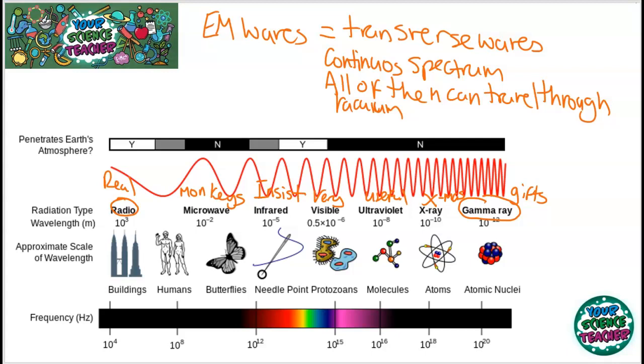If we look at this electromagnetic spectrum, you'll notice the radio waves have the largest wavelength, however they have the lowest frequency. This means it's also the lowest energy. That means that gamma rays have the highest frequency and the highest energy as well.